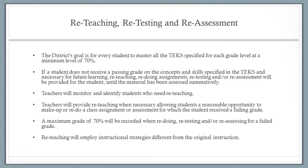When reteaching, retesting, and reassessment are needed, remember the district's goal is for every student to master all the TEKS specified for each grade level at a minimum of 70%. If a student does not receive a passing grade on the concepts and skills specified in the TEKS and necessary for future learning, reteaching, redoing assignments, retesting, and/or reassessment will be provided for the student until the material has been assessed summatively.